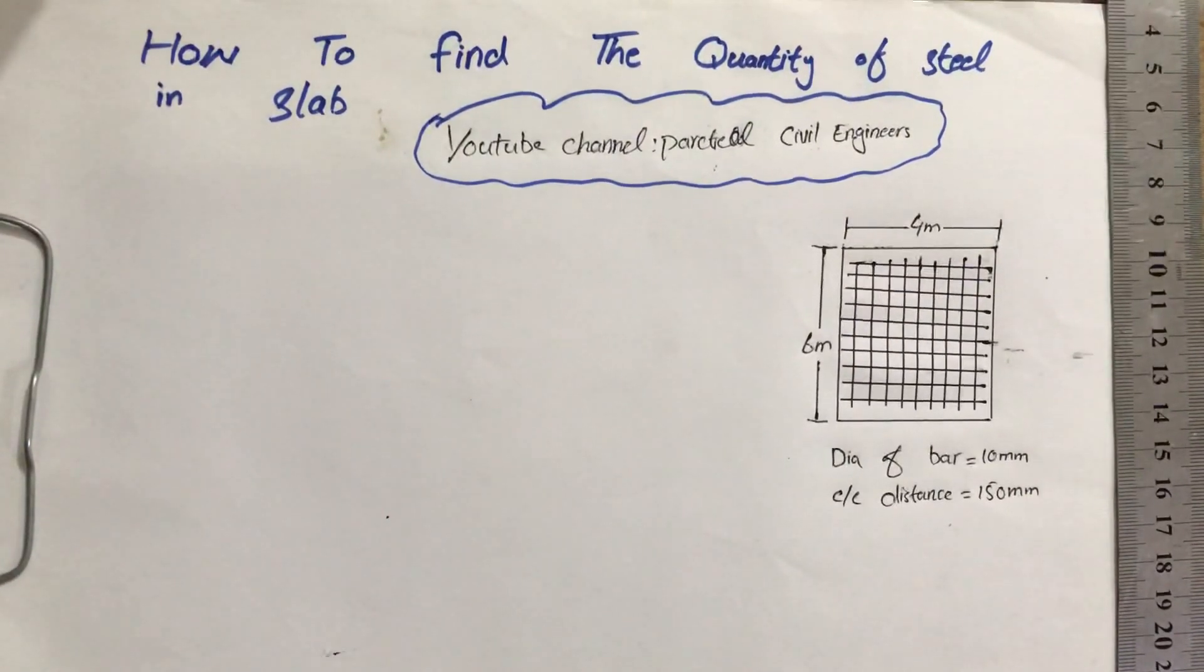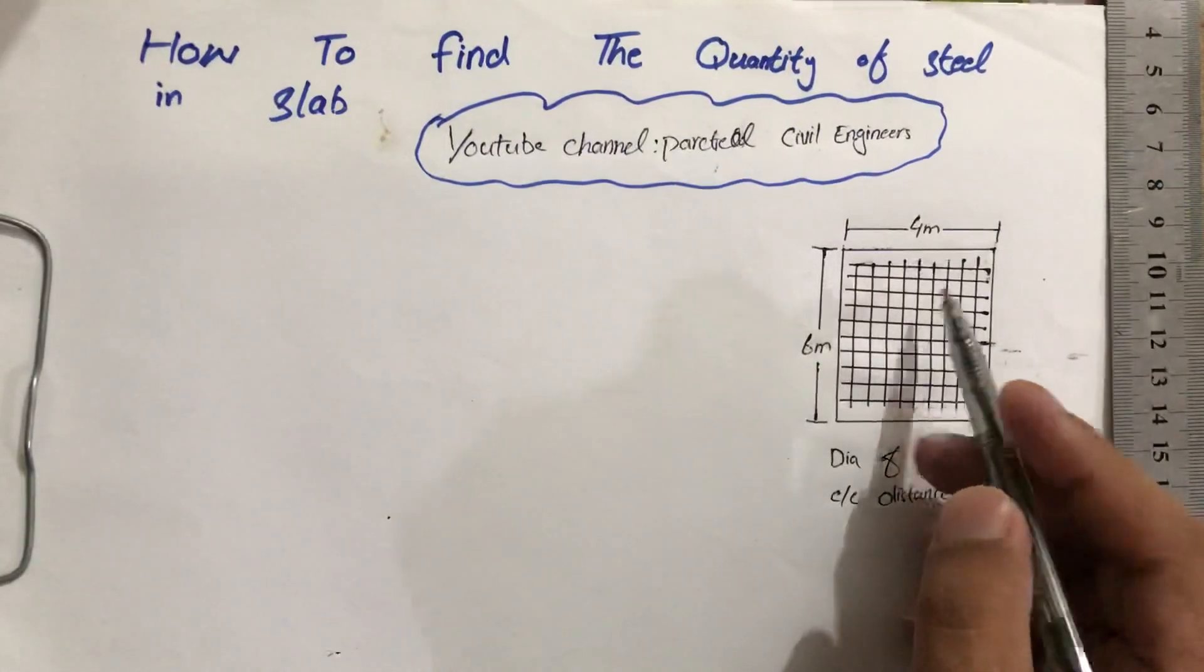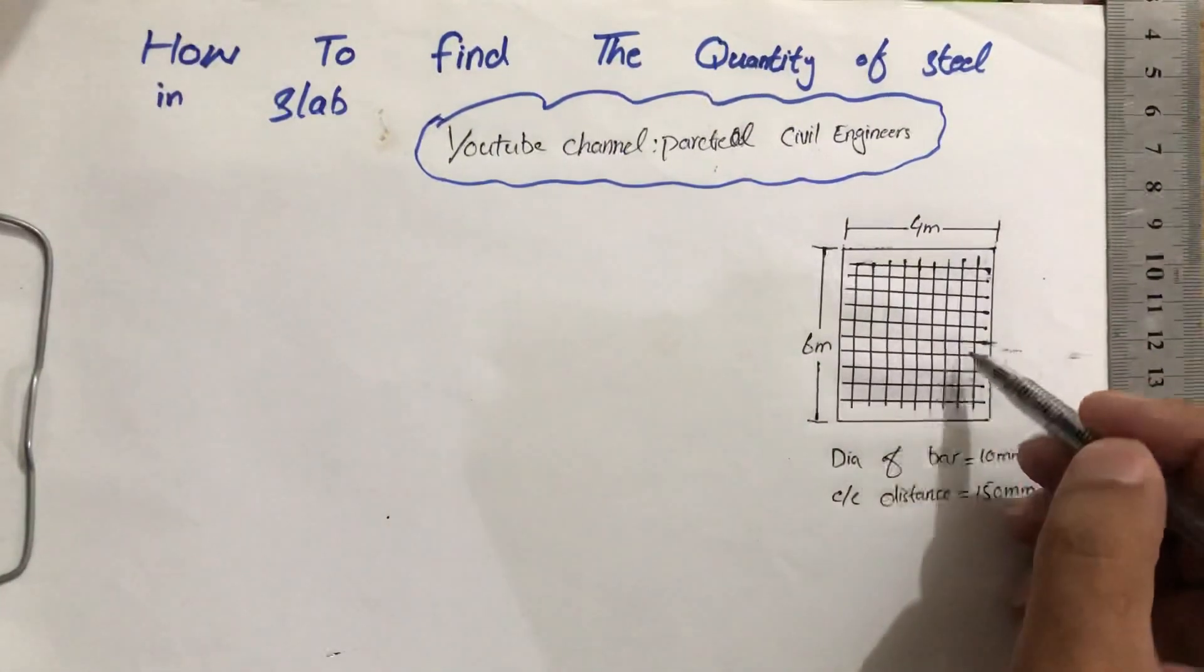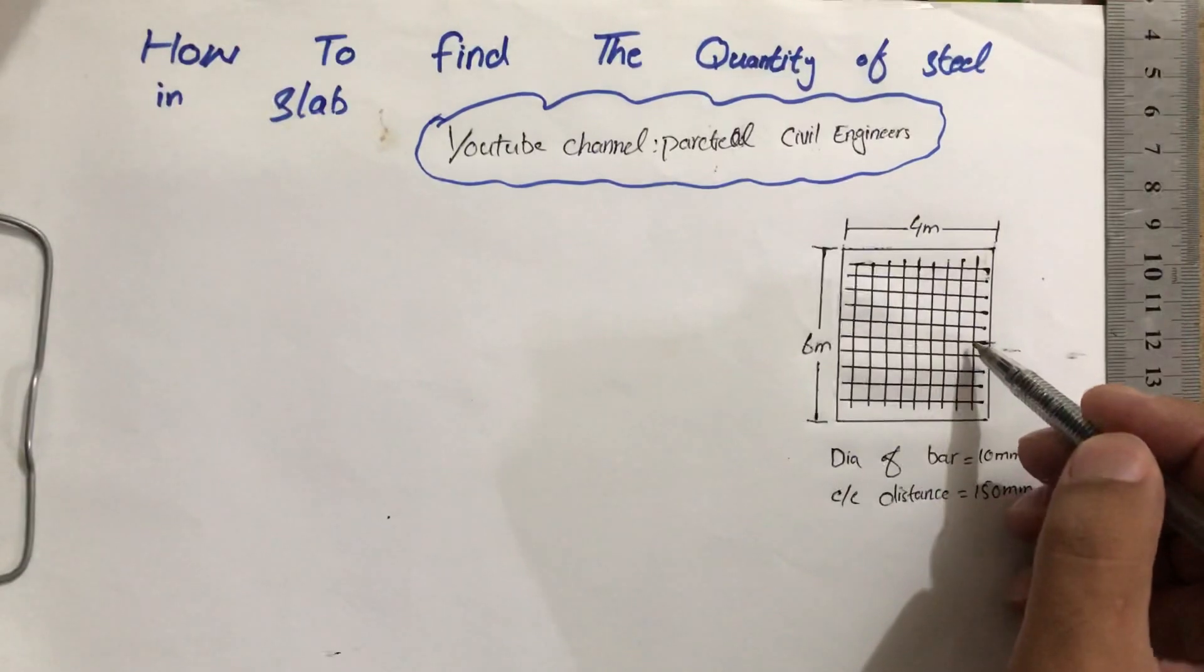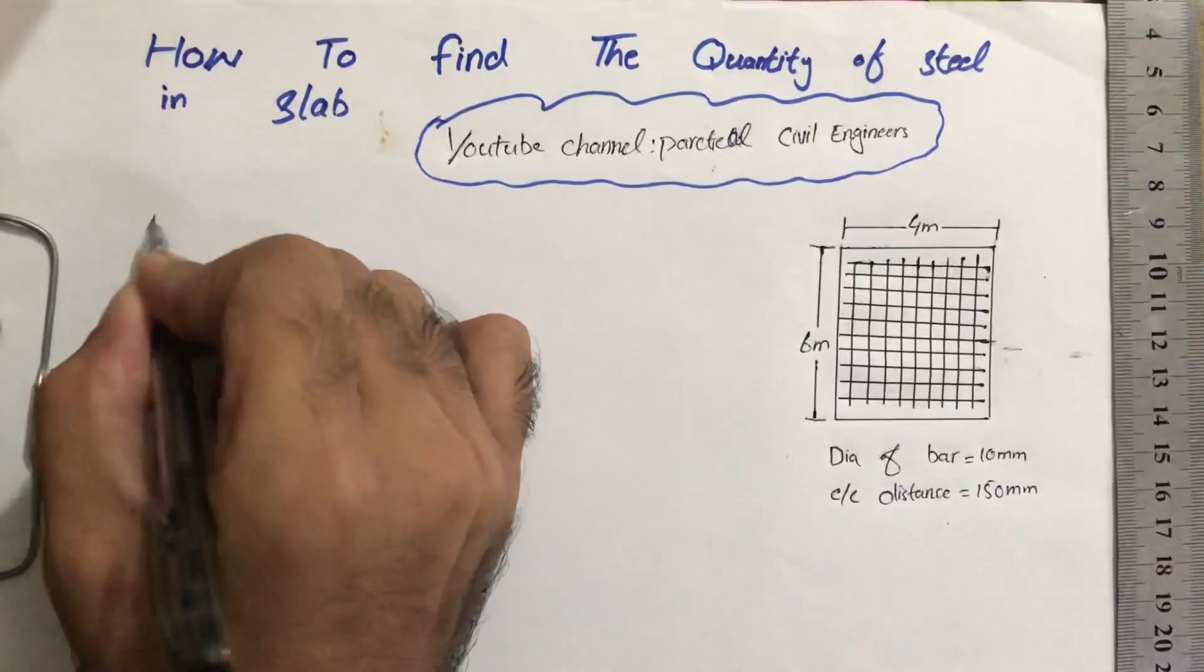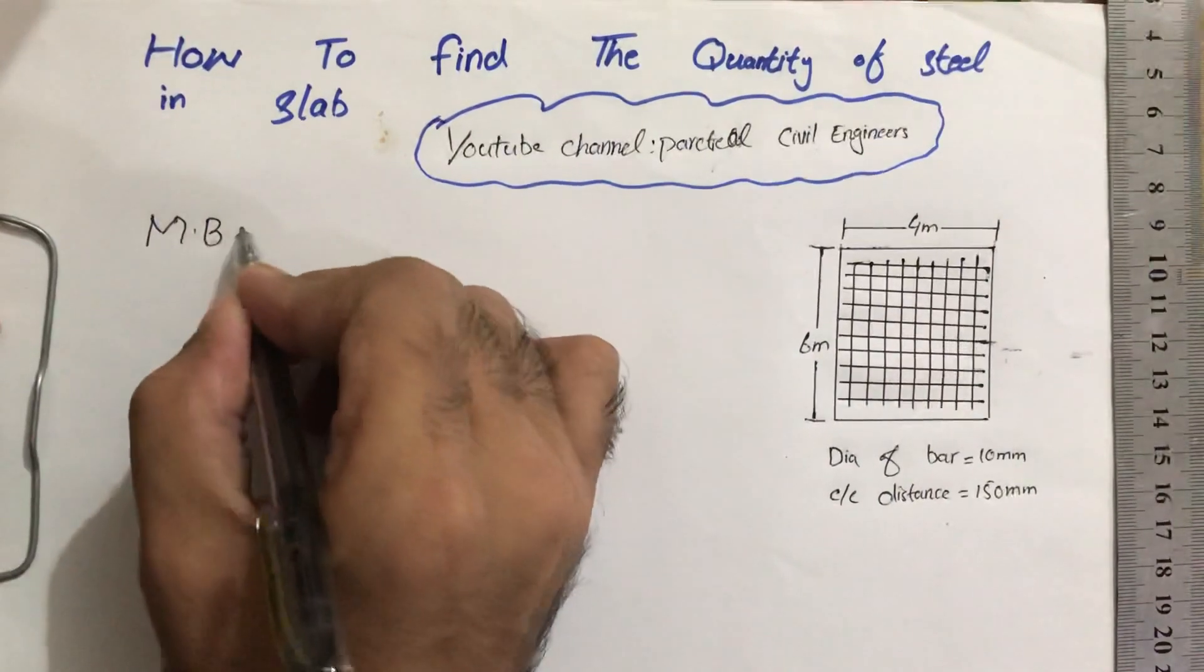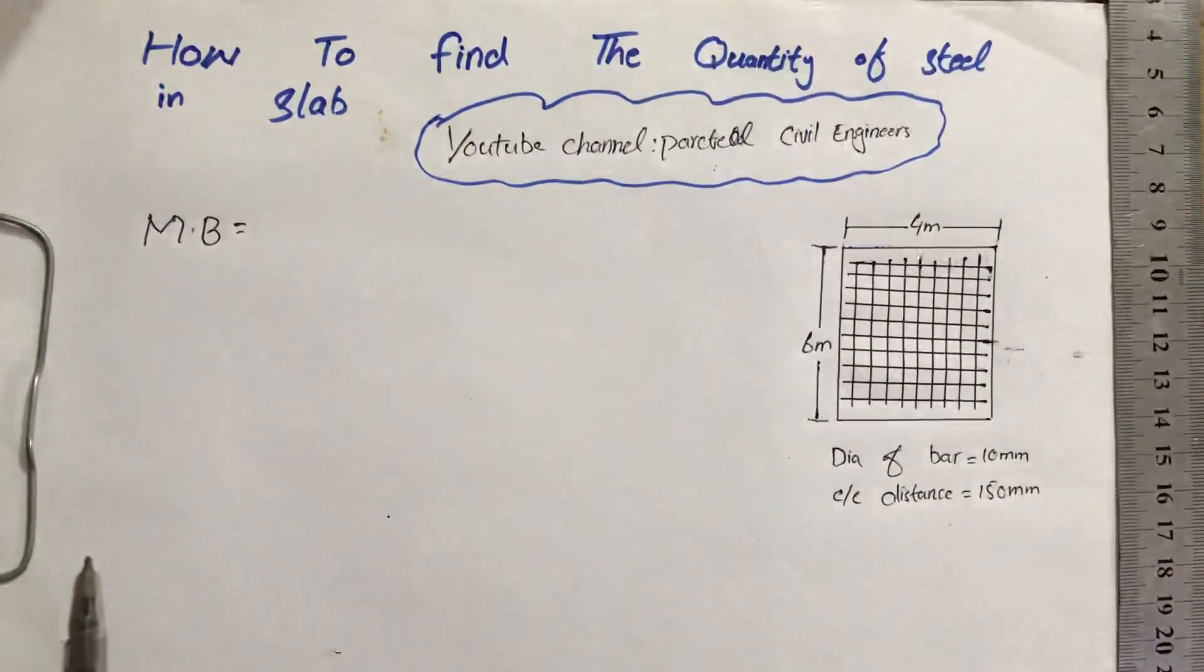Before starting, we have to find out about main bars and distribution bars. Always on a shorter span we call it main bars, and on a longer span we call it distribution bars. So first we have to find the main bar. For main bars, when you find the number of bars...